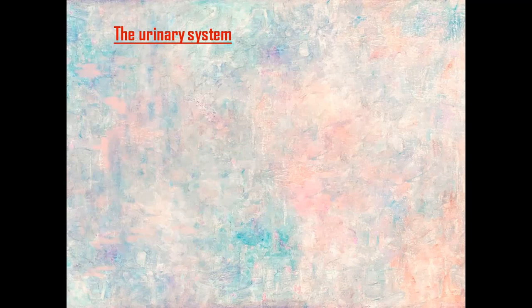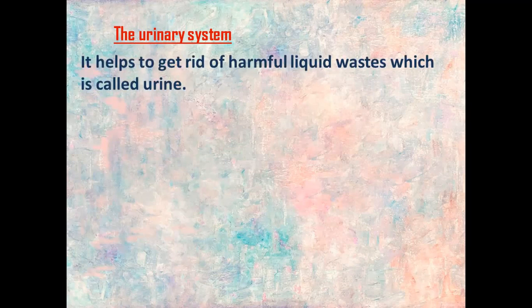We're talking about the urinary system. Our body consists of six systems. The first one is the digestive system, which helps to digest the food that we eat. Then we talked about the respiratory system, which helps us in breathing or respiration. The third system is called the urinary system, and it helps us to get rid of harmful liquid wastes called urine.